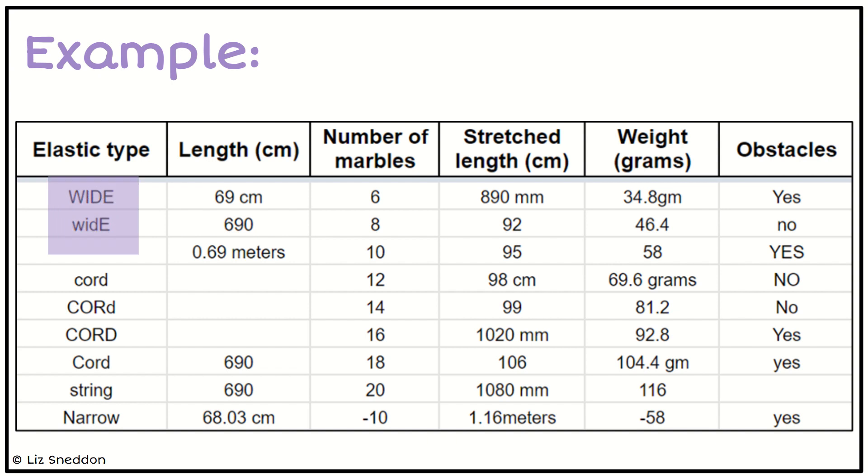The first thing I notice is that when it talks about the elastic type 'wide,' there are two different formats—some uppercase, some lowercase. That's a problem. I need to make sure they both have the same capitalization whenever I use the word 'wide.' Same with the word 'cord'—there are a number of different ways it's been written, and I need to get the formatting consistent.